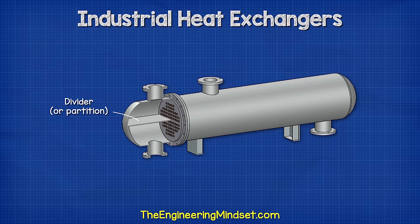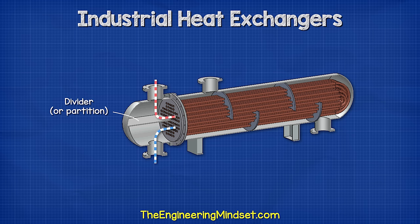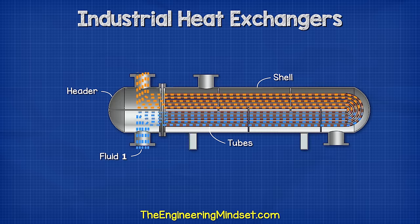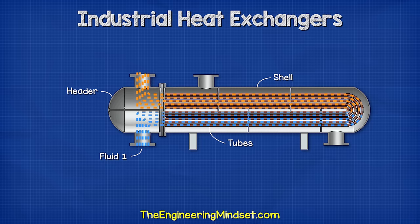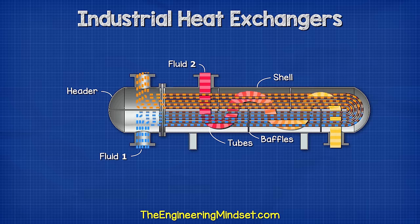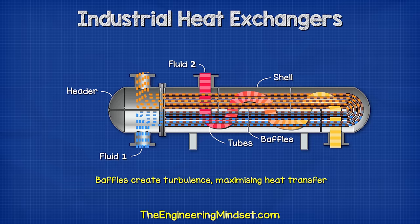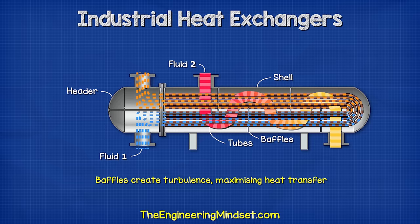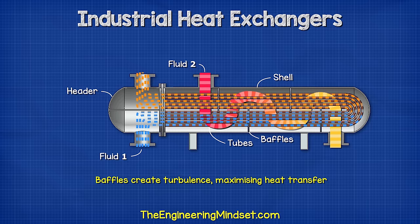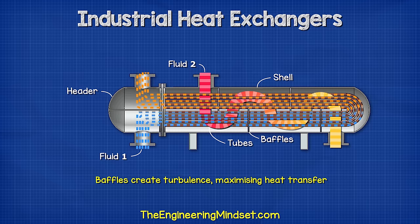Inside the header is a sheet of metal known as the divider or partition. This separates the tube ends, enabling the fluid to flow into and then out of the heat exchanger tubes. Fluid 1 flows through the header, into and around the tubes, then back to the header. Fluid 2 enters the shell and surrounds the outside of the tubes. The baffles partially block the flow, forcing the fluid to turn multiple times. This creates a turbulent flow and ensures that fluid 2 mixes with itself, which ensures maximum heat transfer.